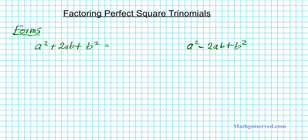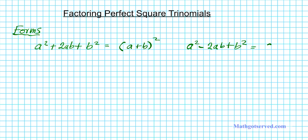Let's go ahead and factor these two. The factoring form of the first perfect square trinomial is (a + b) squared. The shortcut is you take the square root of the first term and the square root of the last term, then bring down the middle sign. If the signs are both plus, it's going to be plus. Applying the same idea to the second form gives you (a − b) squared.